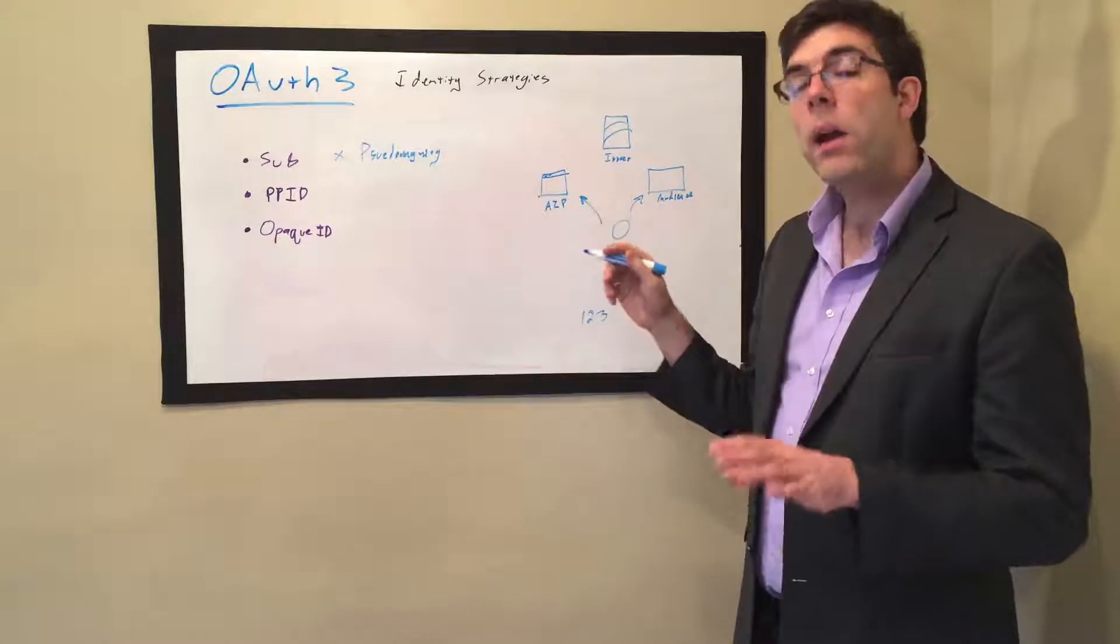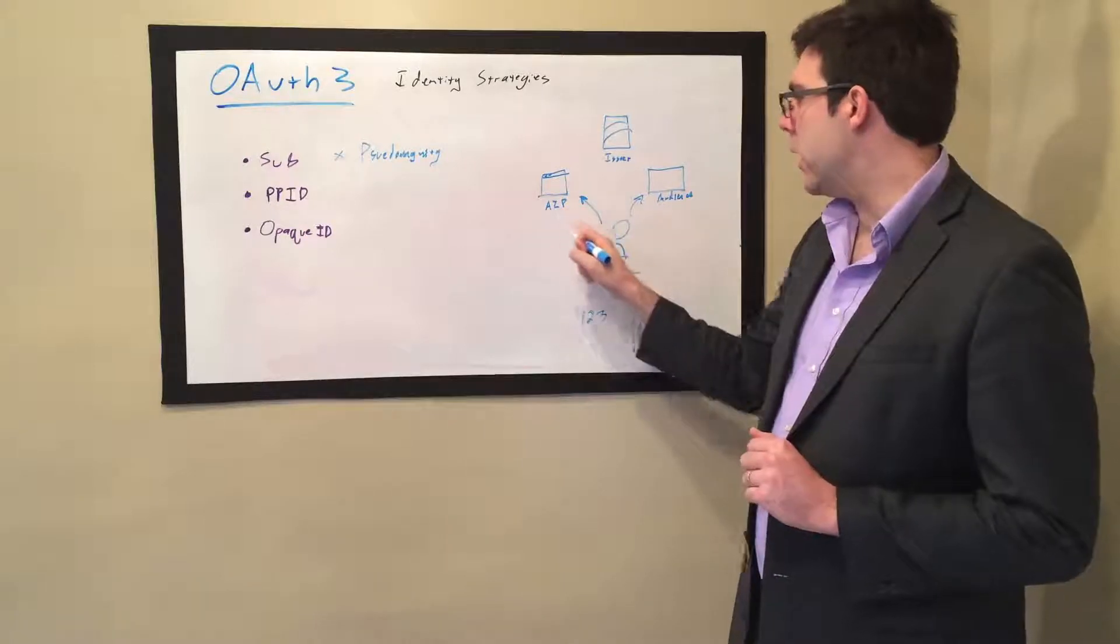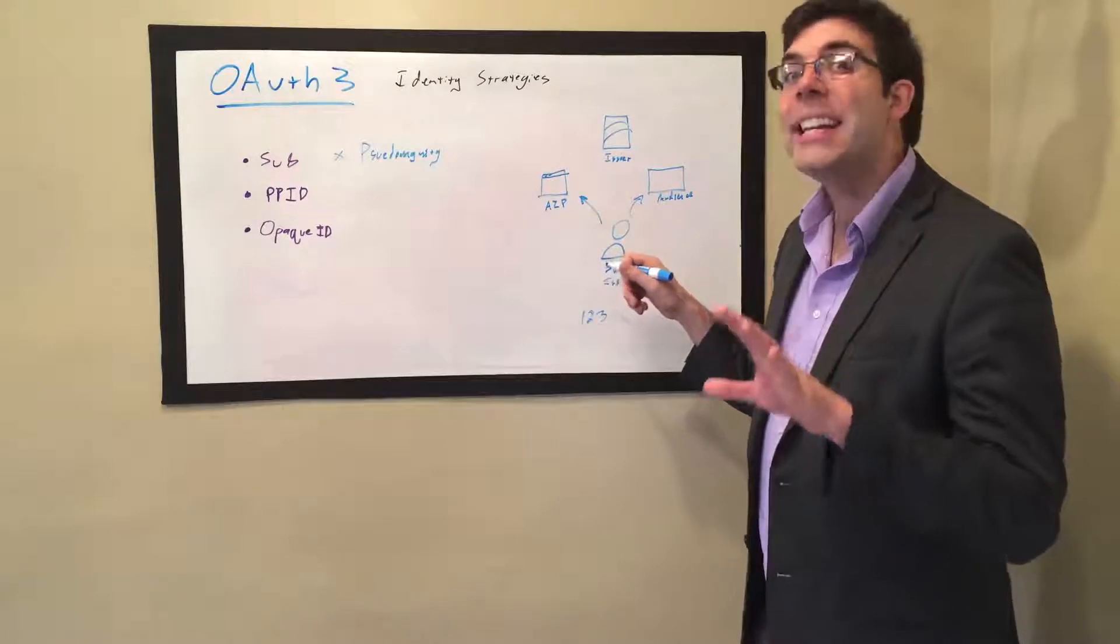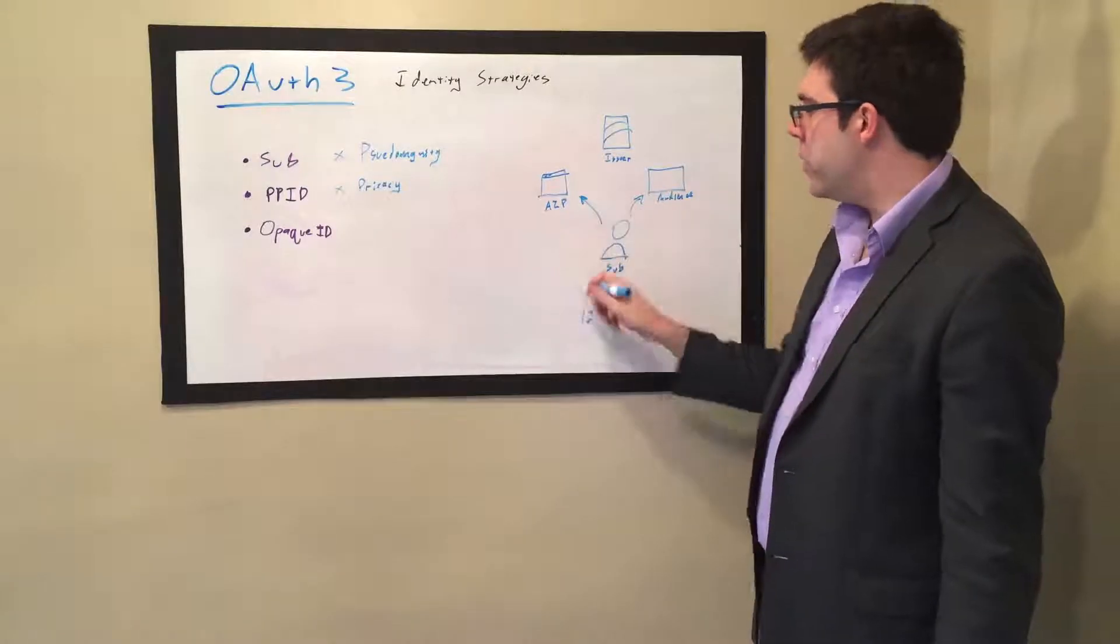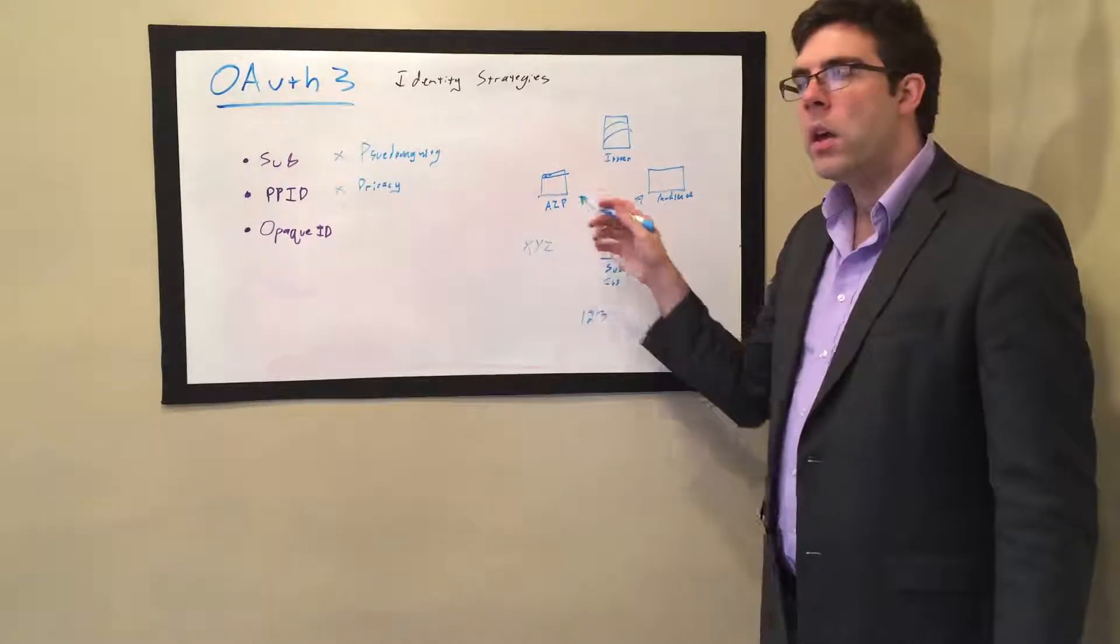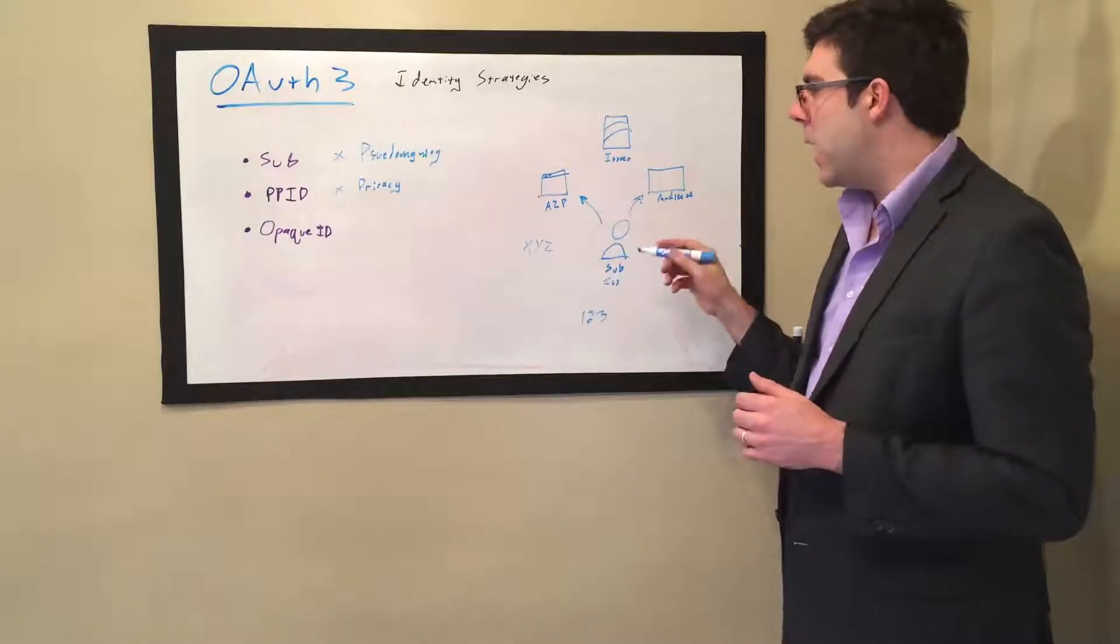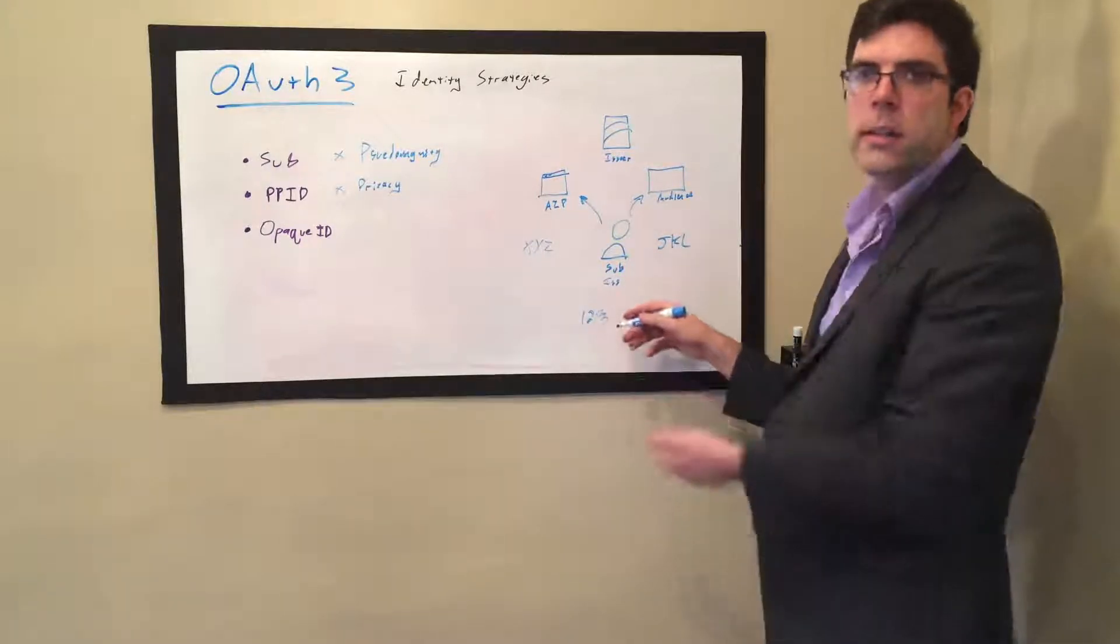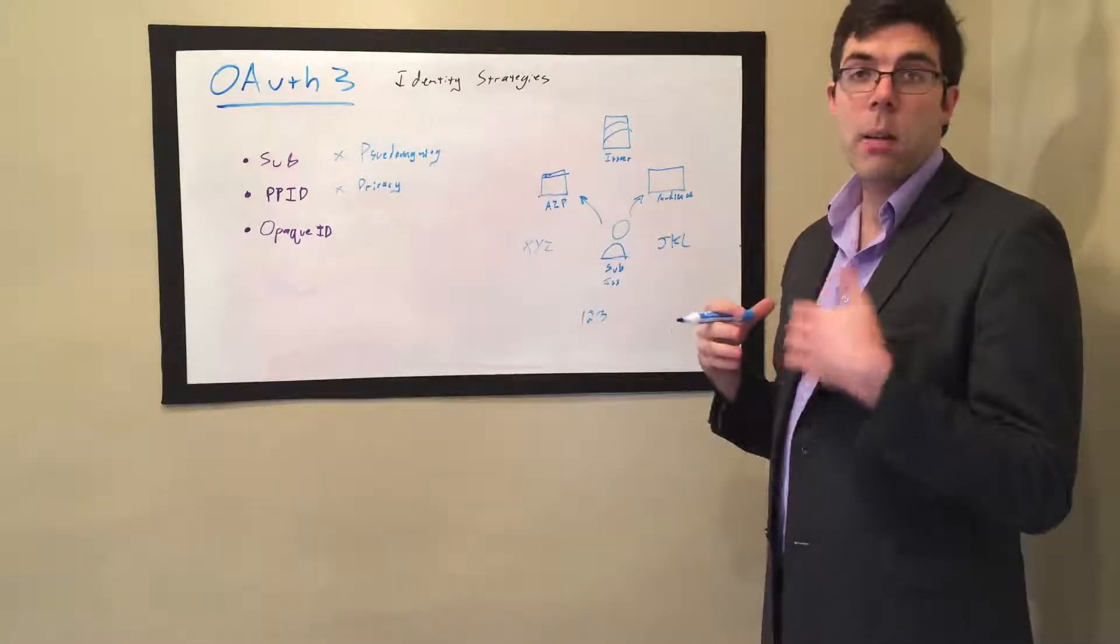Now the next one, pseudonymous pairwise identifier means that you're pairing between the authorized party or the audience and the subject to create the ID that gets used. So if my true ID is one, two, three. So, so if I'm one, two, three over here, then I have an X, Y, Z over here. So every time I speak with music.com, I communicate as though I am X, Y, Z. And then every time I talk to videos.com, then I will communicate as though I am JKL. So my real identity is one, two, three. I tell this guy I'm X, Y, Z. I tell this guy I'm JKL. If they talk to each other, they can't corroborate.